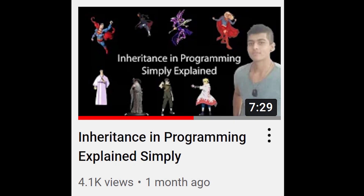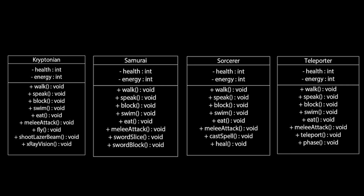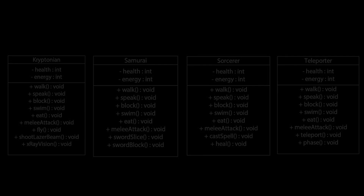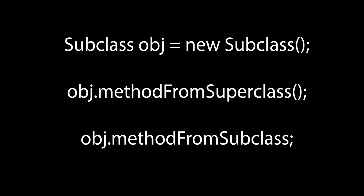In my video on inheritance, which can be found by clicking the link in the description below, we spoke about how we could code hero characters in a land of heroes video game. Instead of using multiple classes with every single method relating to different hero types being repeated across each class, we could have a superclass with all the methods common to every hero — like walk, speak, block — implemented there, and then have subclasses for the different hero types with their specific methods.